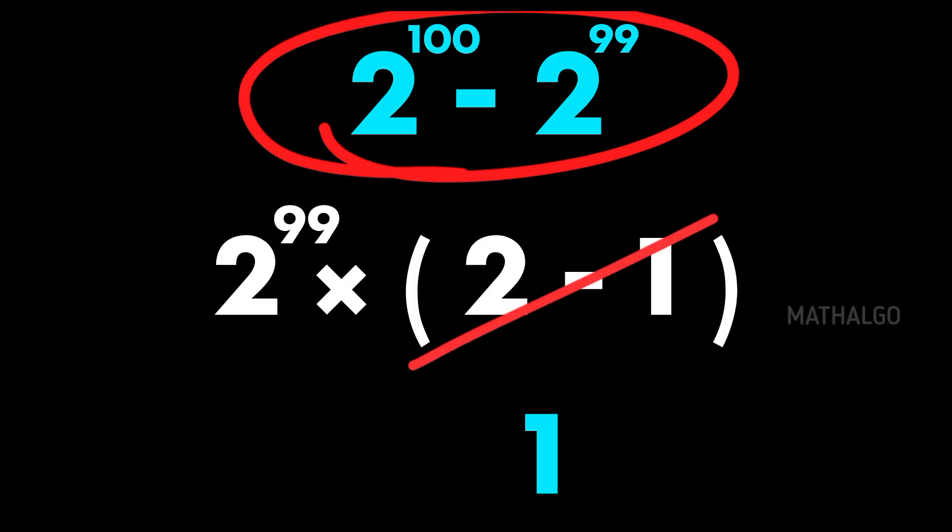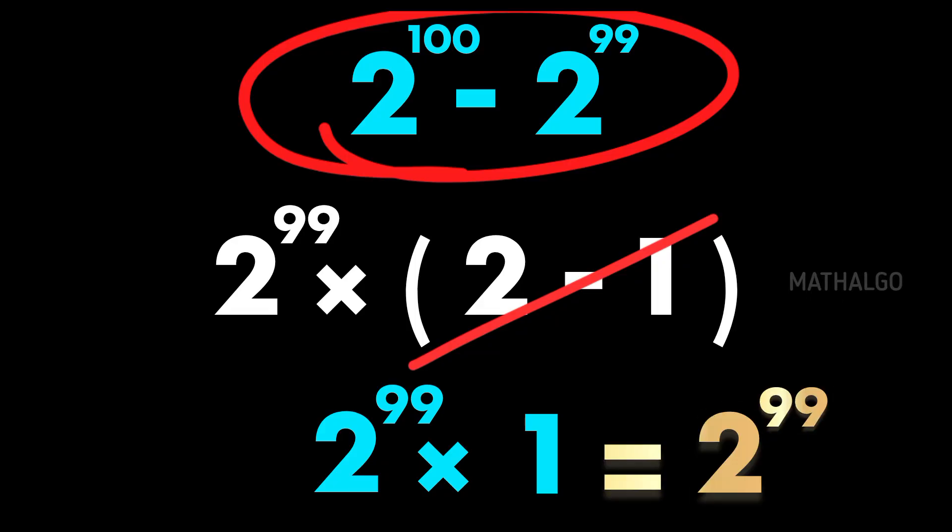2 minus 1 is 1, so the entire expression collapses to simply 2 to the power of 99.